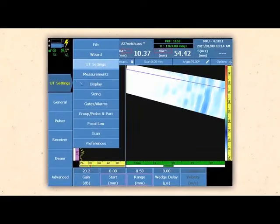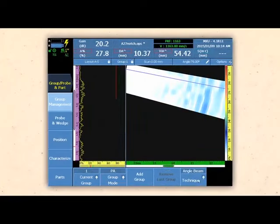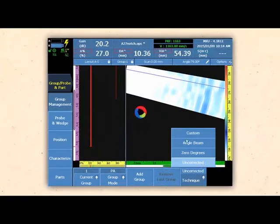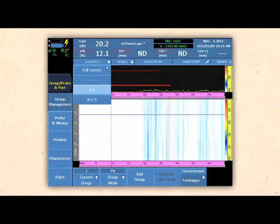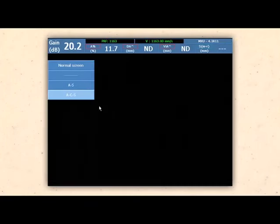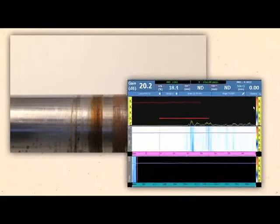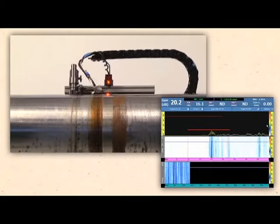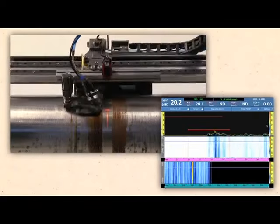For high angle surface testing, the OmniScan display is configured for an uncorrected S-scan to optimize the display size, and the gate is positioned to represent the width of the inspection area over the weld in the C-scan for detection of surface and near-surface flaws.